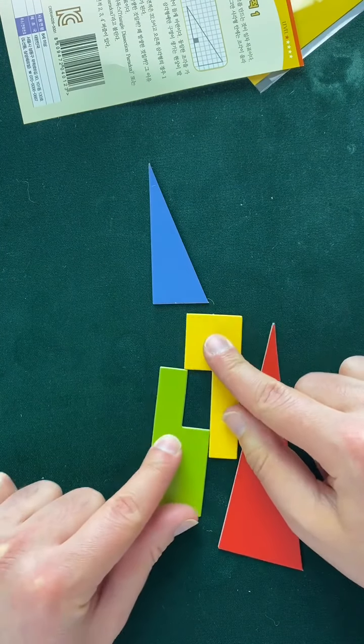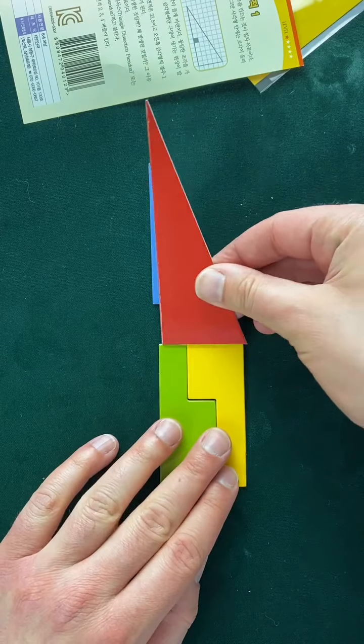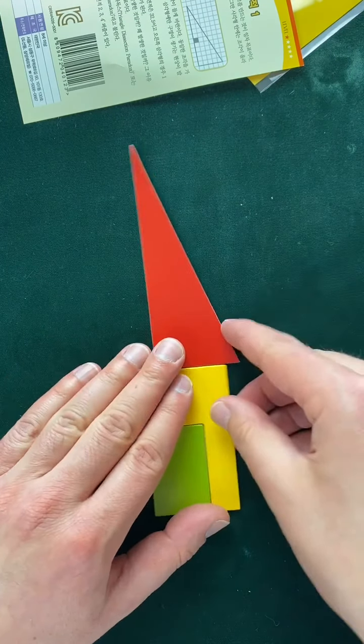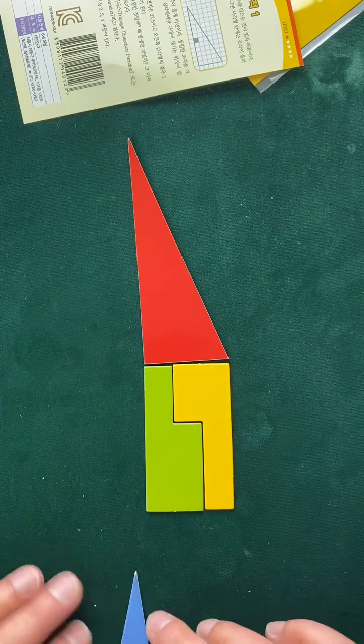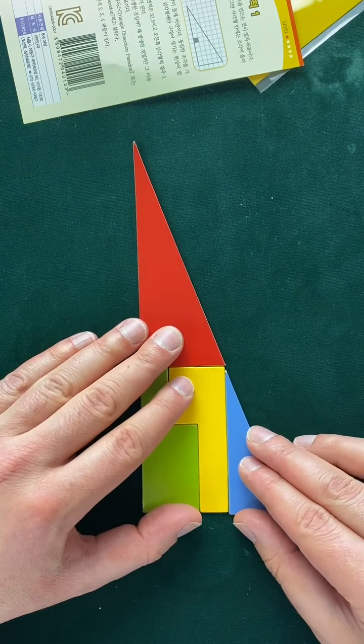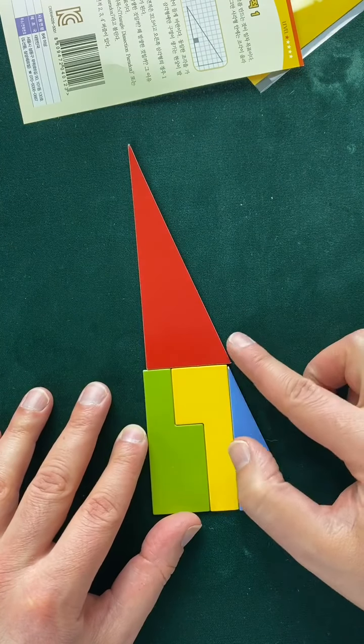But if you move those like this, now it's a wider triangle. This goes on this part. And now the base of the triangle, this is going to be it. The base of the triangle goes right there. And that is a perfect triangle. That's perfect.